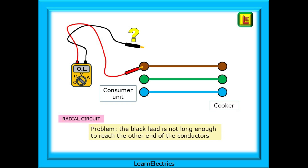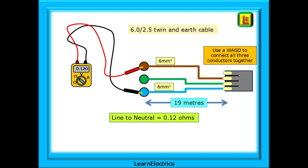The first problem we have is that the test metre probes only have a lead length of around one metre. If we try to measure just one conductor — the line, for example — at the consumer unit, the second probe will not reach the cooker. The same is true with ceiling roses and many other radial circuits. There is an easy solution: use a Wago connector or similar at the cooker end, the point of use, so that we have the other conductors as a return path.